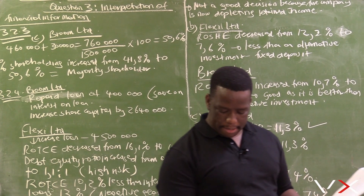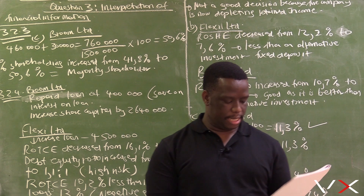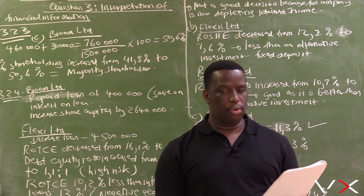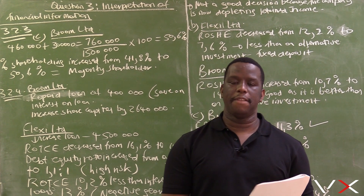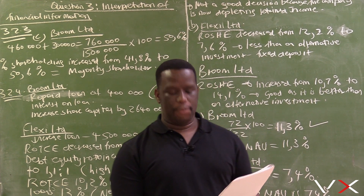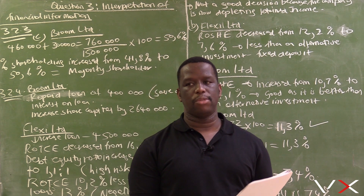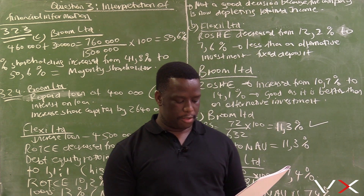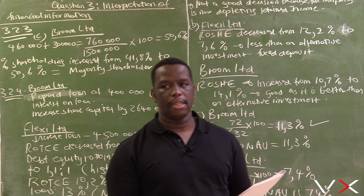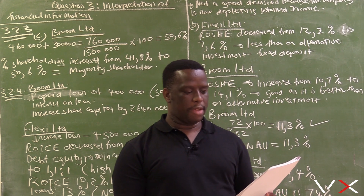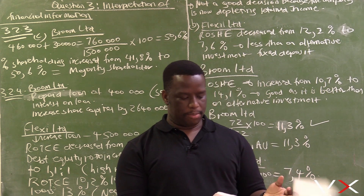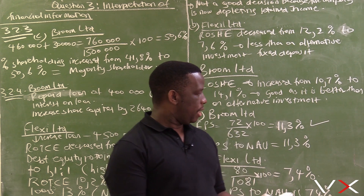With dividends, earnings and returns, the payout rate should not be unreasonable. We need to consider earnings per share. When the dividend per share is more than the earnings per share, it indicates that funds are being taken from the retained income account — money kept for future development of the business.